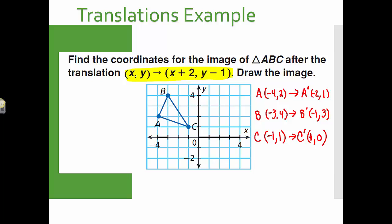Now I'm going to plot the new points A prime, B prime, and C prime. Negative 2, 1. And then A prime. Negative 1, 3. B prime. And then 1, 0. C prime. And there is our translation. Every point was moved in the same direction, the same distance.